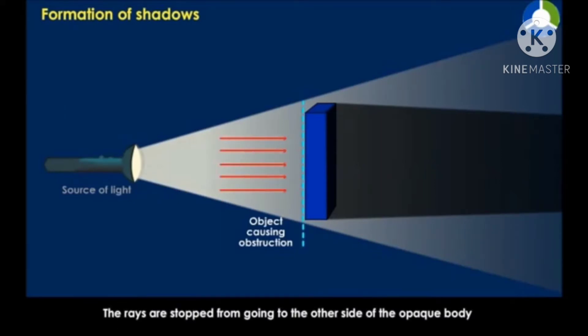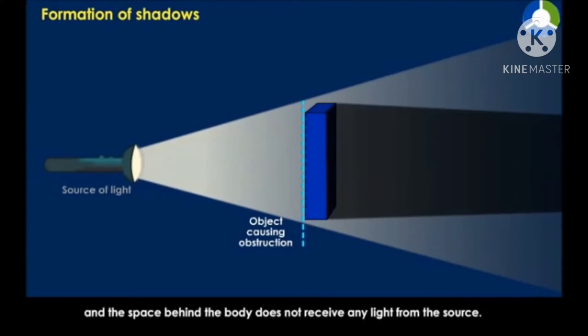The rays are stopped from going to the other side of the opaque body, and the space behind the body does not receive any light from the source.